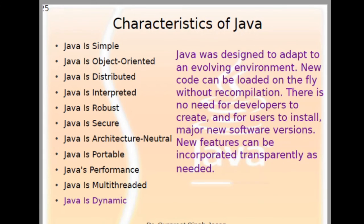Java is a dynamic language. Java was designed to adapt to an evolving environment. New code can be loaded on the fly without recompilation. There is no need for developers to create, or for users to install, major new software versions. New features can be incorporated transparently as needed. Java is very dynamic — we can add anything into it anywhere at any time.